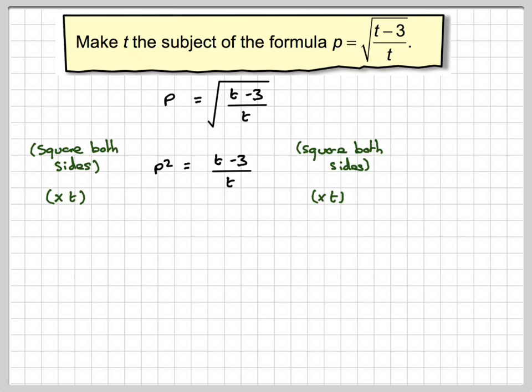And then what we're doing is we multiply both sides by t. So it's going to give me tp squared is equal to t minus 3.